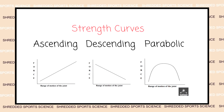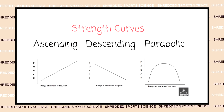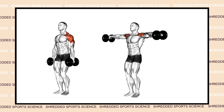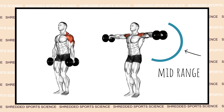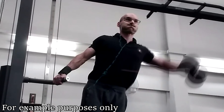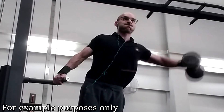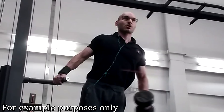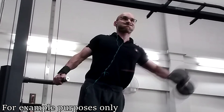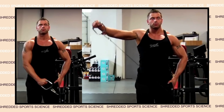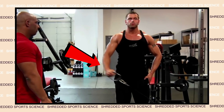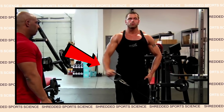With exercise variations, you can perform the same movement in a different way to change the strength curve of an exercise. For example, when you perform the lateral raise to hit the medial deltoid, the exercise feels hardest towards the mid-range of that lift. However, if you perform a lean-away lateral raise — the same movement done slightly differently — it's going to feel harder towards the top end range of motion. And if you perform a low cable lateral raise, it's going to feel harder towards the start of that exercise.